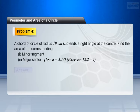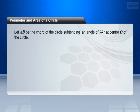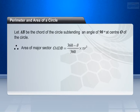Answer. Given: radius of the circle equals 10 cm. Let A, B be the chord of the circle subtending an angle of 90 degrees at center O of the circle. Area of major sector OAB equals (360 minus theta) by 360 into pi r square.